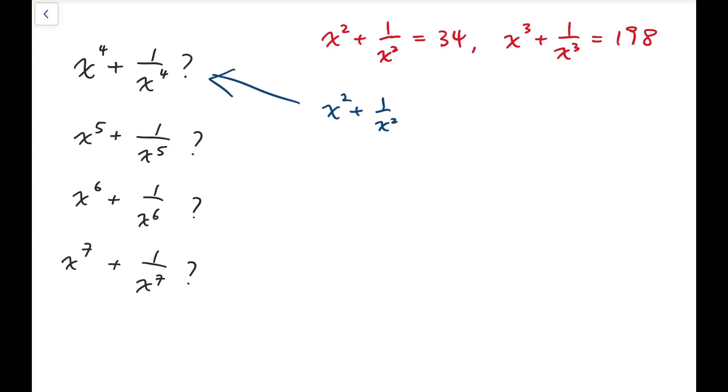squaring the square expression. And so I can quickly see that it's 34 squared minus 2 and by computing you'll get 1,154.